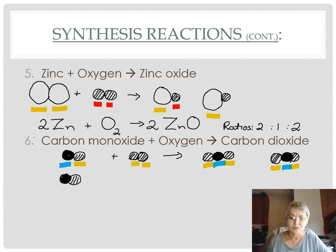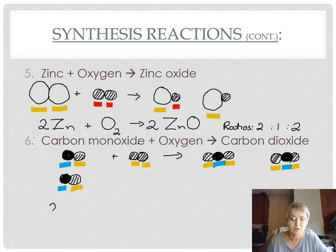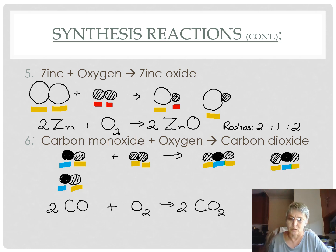By adding the second carbon I've sorted out the carbon atoms — there are two on each side — and we've sorted out the oxygen atoms, there are four on each side. So to write the equation in symbols, we have two carbon monoxide molecules reacting with one oxygen molecule to form two carbon dioxide molecules. The ratio between the reactants and the products is two to one to two.